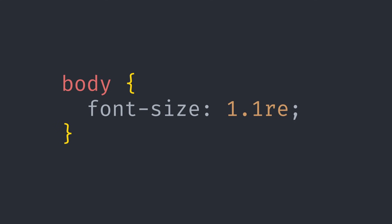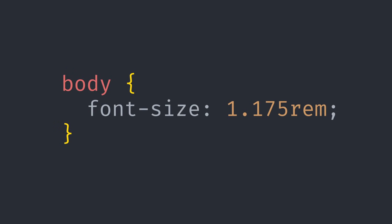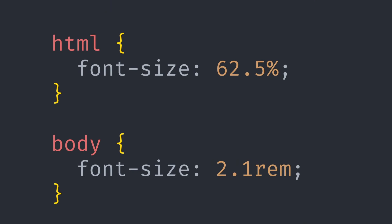If someone has taken the time to change their browser settings to have something default to 21 pixels, and you overwrite that with something really small because you think it looks better, that's a poor experience. One reason people avoid rem is working off base 16 can be hard. But you can set the font size on your HTML element to 62.5%, which sets the base font size to 10 pixels and makes the math easier. So if you want something to be 21 pixels, you set the font size to 2.1rem, because 2.1 times 10 gives you 21 pixels.